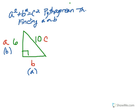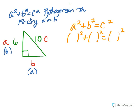We will now use the Pythagorean Theorem to find the missing sides. From our picture, we can see that we labeled A as 6. We don't have a number for B, but we do have a number for C, which is 10.